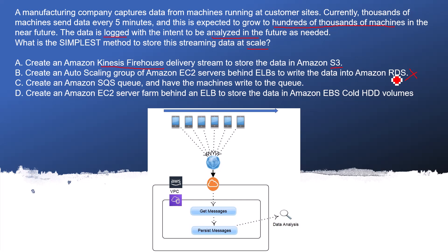Option C: Create an Amazon SQS queue and have the machines write to the queue. This option does not mention a Lambda-type consumer, so it will become very expensive, and it is not the simplest way. You also cannot scale it like Kinesis Firehose. So this is not the correct answer — it is very expensive.